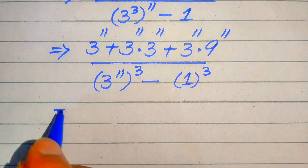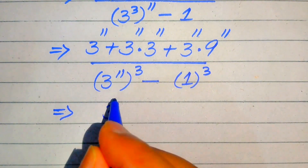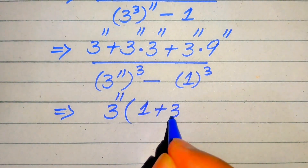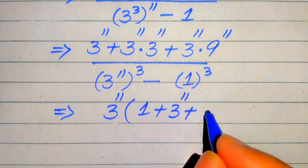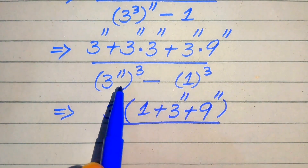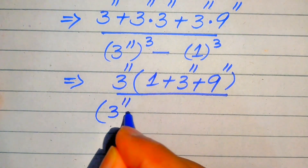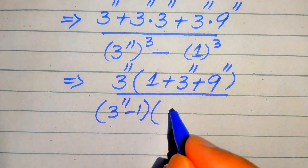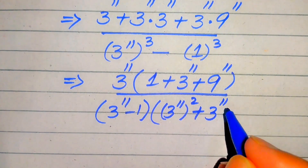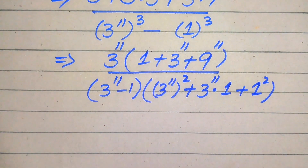In the next step, focusing on the numerator, we see that 3 to the power of 11 is common in each term. Taking out 3 to the power of 11 as a common factor, we get the remaining values: 1 plus 3 to the power of 11 plus 9 to the power of 11. For the denominator, we apply the cubic formula: a³ minus b³ equals (a minus b)(a² plus ab plus b²), where a is 3 to the power of 11 and b is 1.